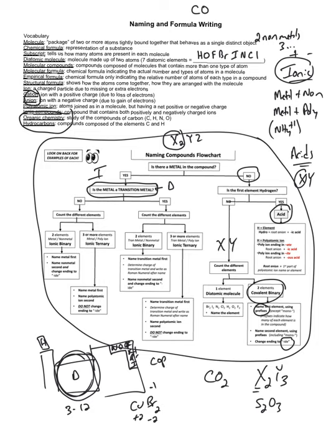So to name CuBr2, we say copper(II) bromide. If the metal is in the D block, we use Roman numerals for the charge — not how many of them we have, but the charge on that metal. If the metal is in groups 1 or 2 or below the red staircase, we do not need to include Roman numerals.